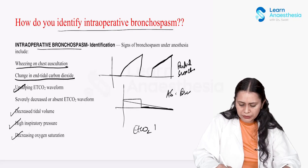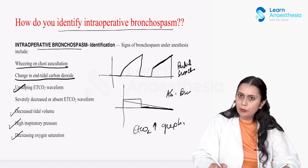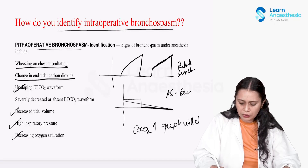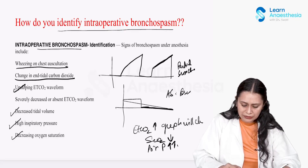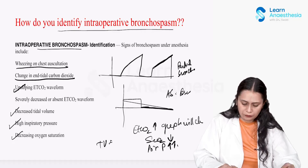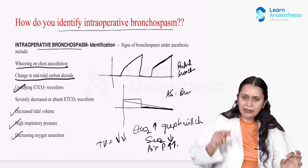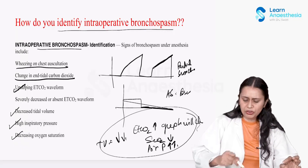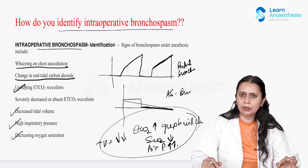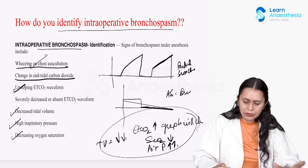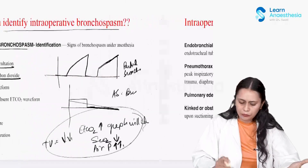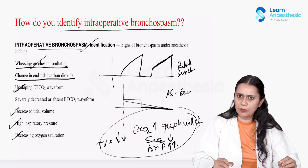Initially, the EtCO2 will increase and the upsloping graph will change. Saturation will decrease, airway pressure will increase, and the delivered tidal volume will decrease. When I see all these clinical features, I will auscultate the patient and hear a wheeze — this is diagnostic of bronchospasm.